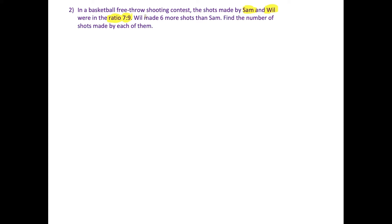And we're also told that Will made 6 more shots than Sam, and we want to find the number of shots made by each of them. So think really carefully about this here. So the ratio is the first thing we could write down, 7 to 9. And this is comparing Sam to Will.